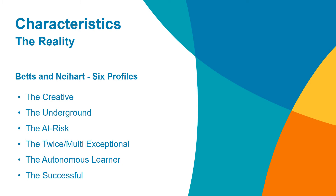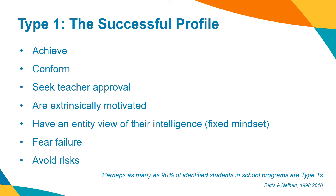The autonomous learner has many characteristics that we aim to develop in our students — they are resilient, they seek challenge, they are independent and they pursue their own goals. Research shows up to 90% of students selected for gifted programs fit Betts and Nyharts' Successful Profile. The name derives from the fact that these students perform well at school where they achieve, conform and seek teacher approval. Their motivation is extrinsic and they will work for grades and other external rewards. However, students within this profile also adopt an entity view of intelligence, or what we call a fixed mindset. This results in a fear of failure and risk avoidance, which can explain why some PIAC students do not initially relish the challenge that our programs offer.